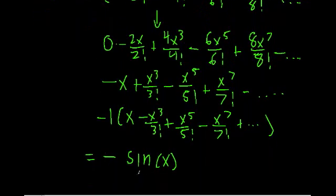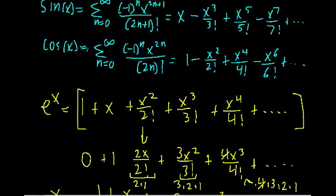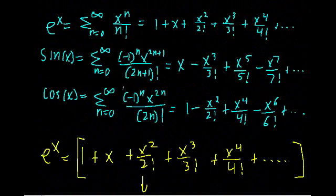So there we have it. We're able to show that the original Taylor series expansions for each of our functions have the same derivatives, and if you want, you'll find that they have the same integrals as the functions that they converge to — which is just another way of showing that these two things are indeed equal. Hopefully I'll see you in the next video. Thank you.